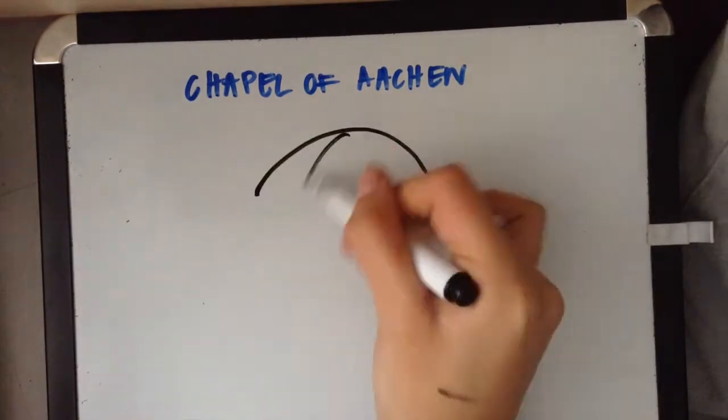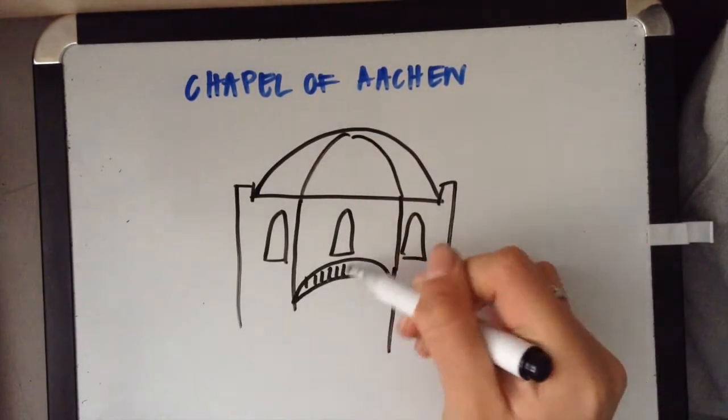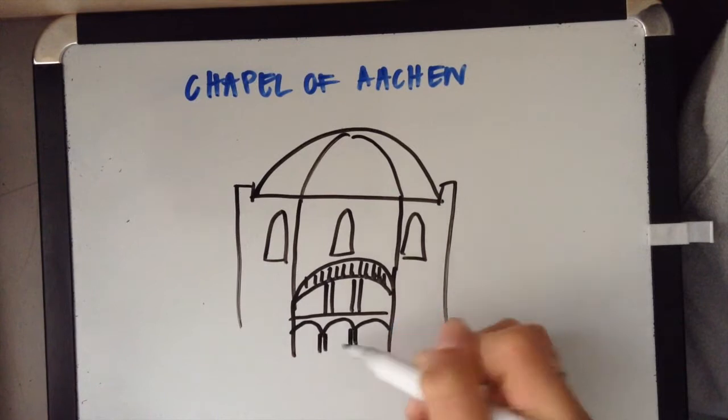Ehrling believed that the buildings of the Middle Ages were anachronistic because they weren't stylistically the same. The most displaced was the Chapel of Aachen.